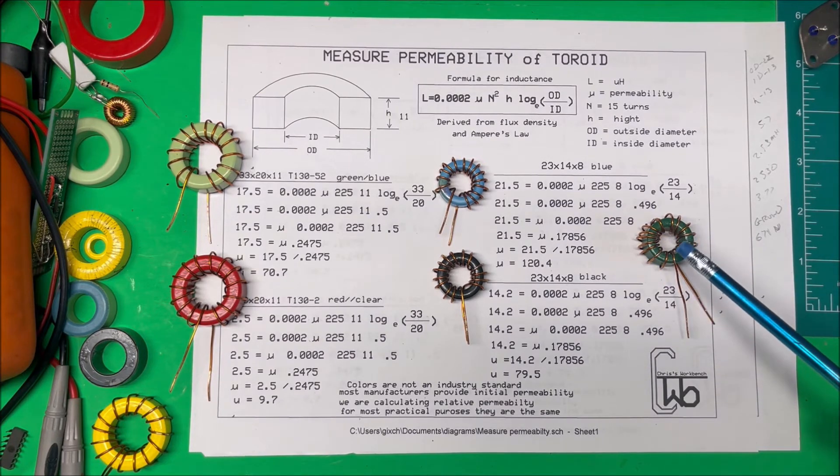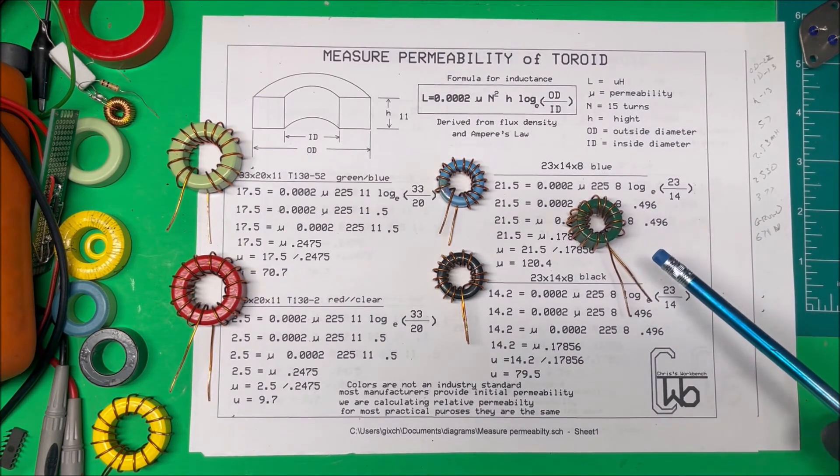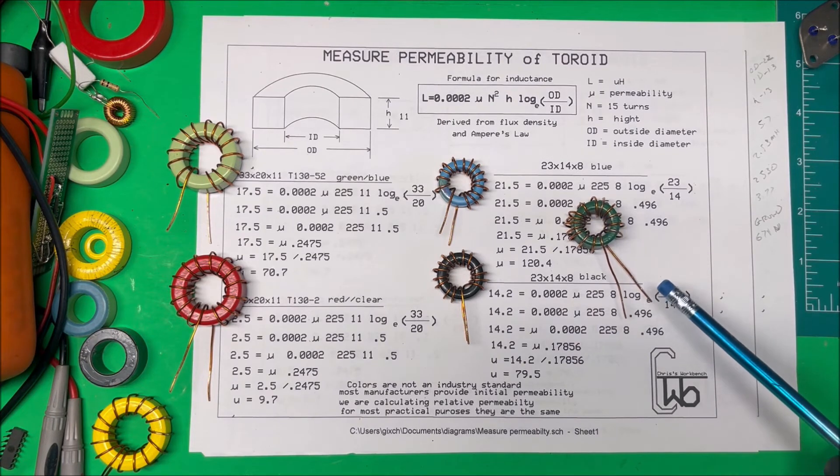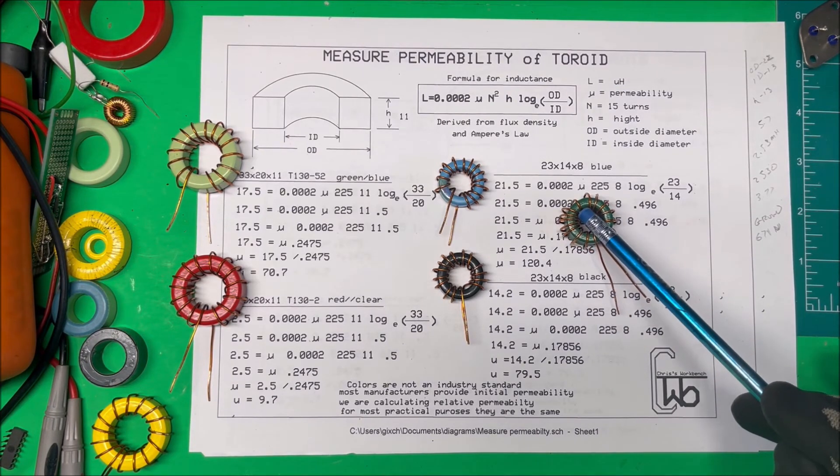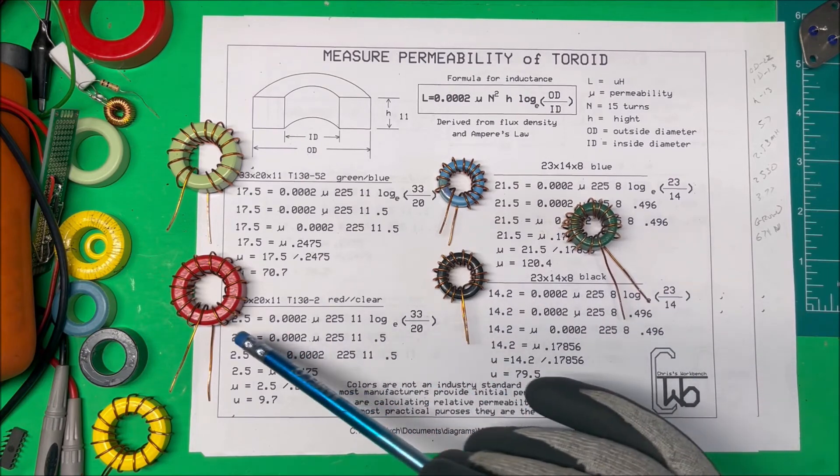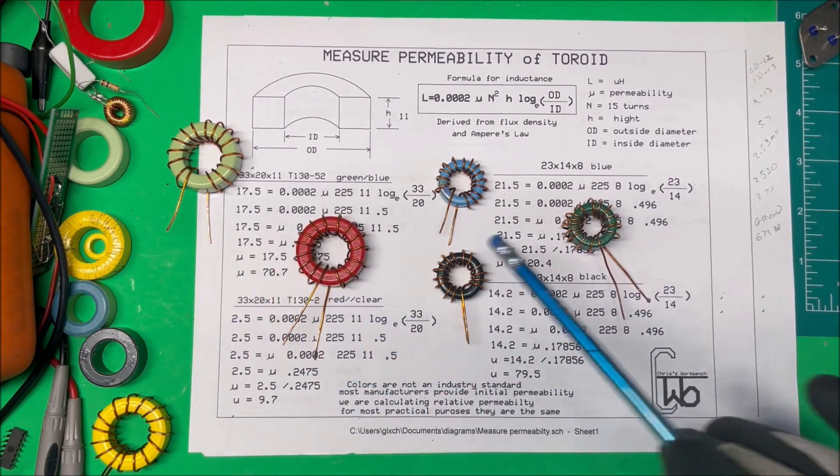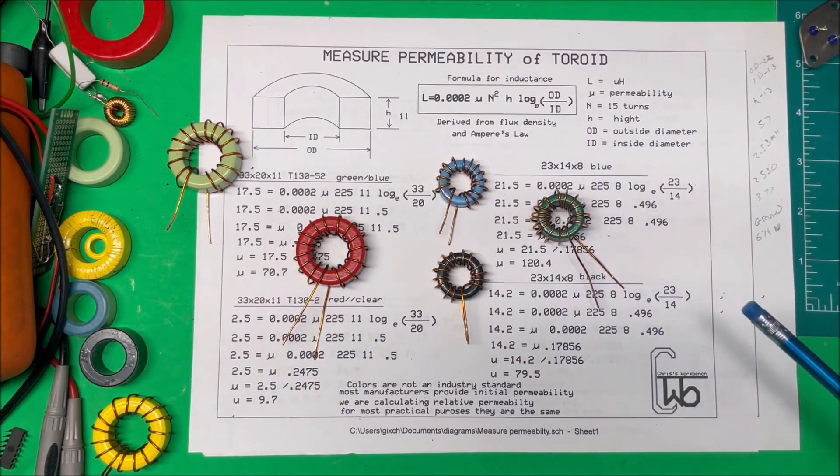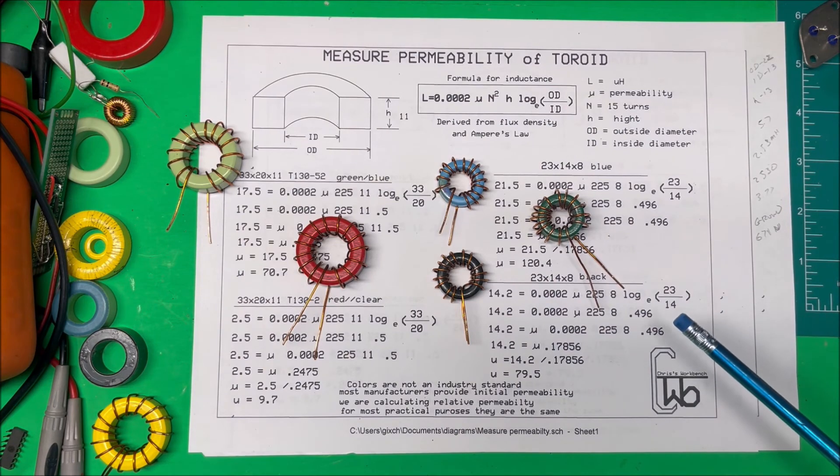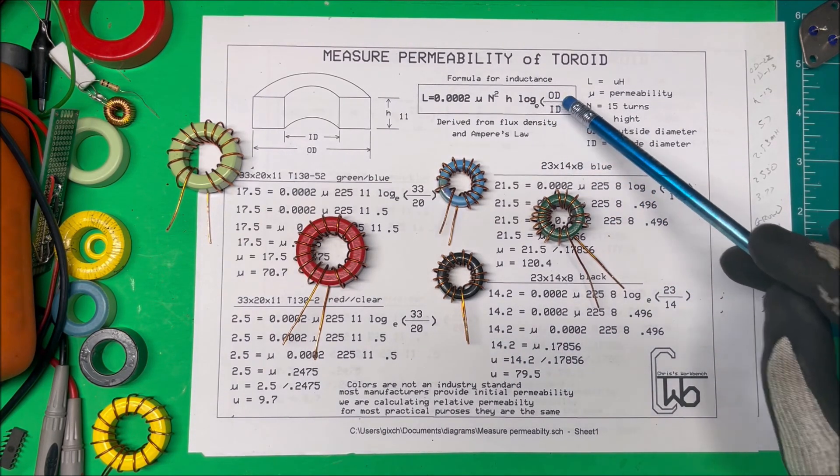But you know, this one's 2530 micro-Henry's and this one's 2.5 micro-Henry's, so big difference with the permeability. That's it—that's how you calculate permeability with this formula. Thank you.